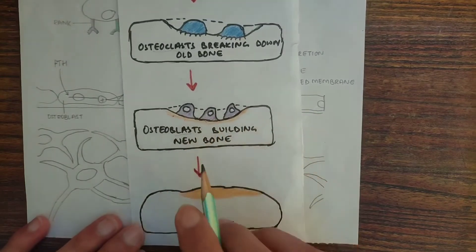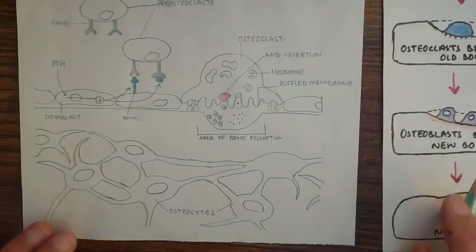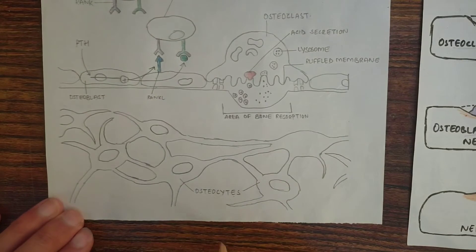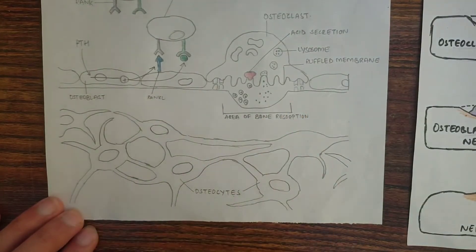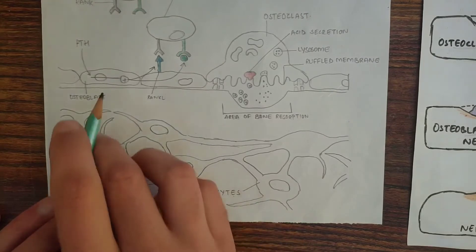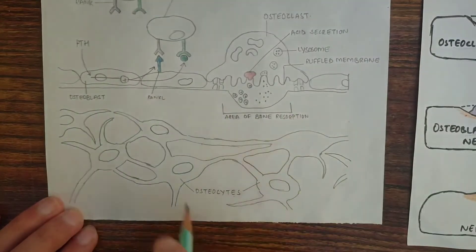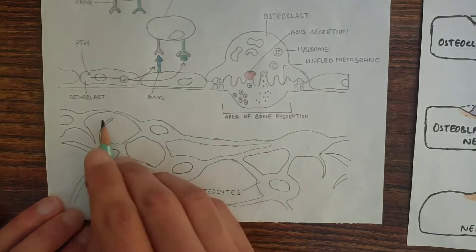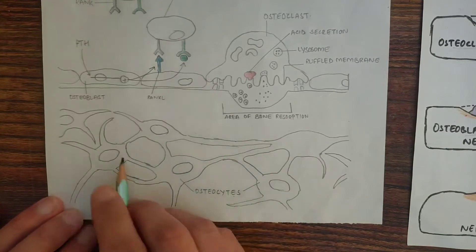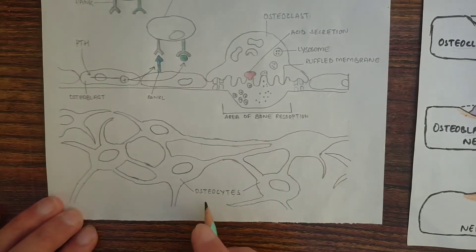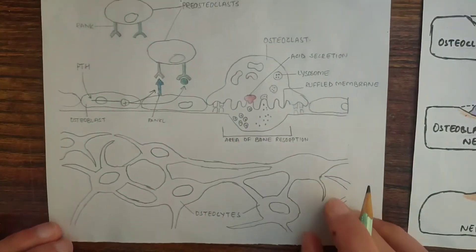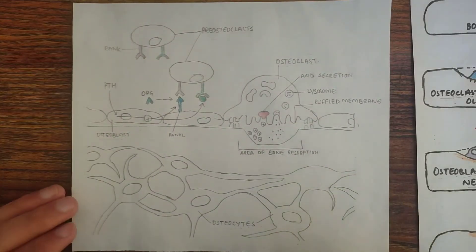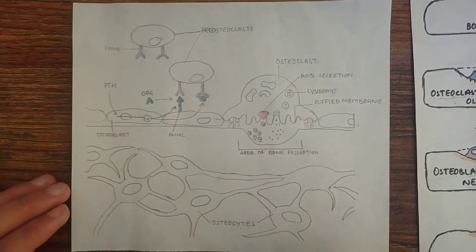Now come to osteocytes, which are osteoblasts that are lying in the bone matrix. As we can see, these cells are the osteoblast cells, and after laying down this bone matrix, these cells got embedded in the bone matrix, and now these cells are known as osteocytes. So these are the three different types of cells.